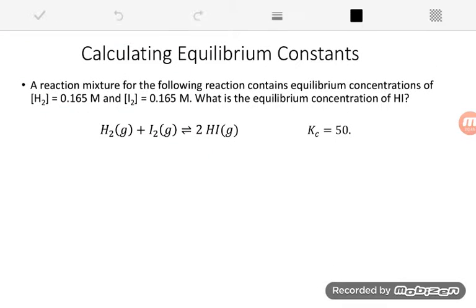Let's look at this example. A reaction mixture for the following reaction contains equilibrium concentrations of H2 and I2. What is the equilibrium concentration of HI? It's giving me the value of Kc. Since it's asking about equilibrium concentrations, the first thing we do is write out the expression.